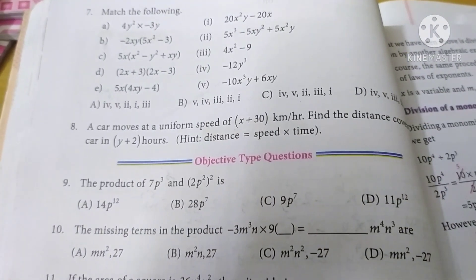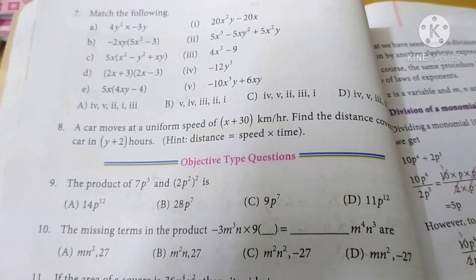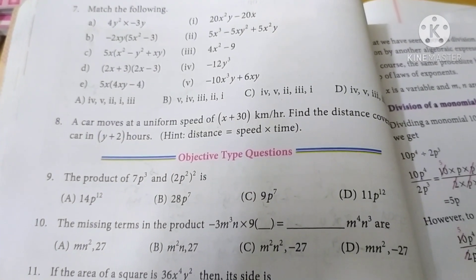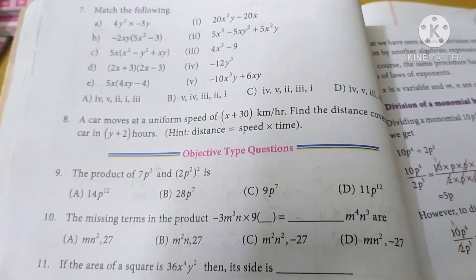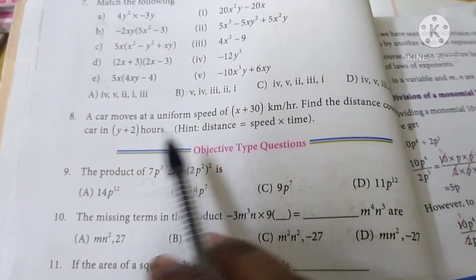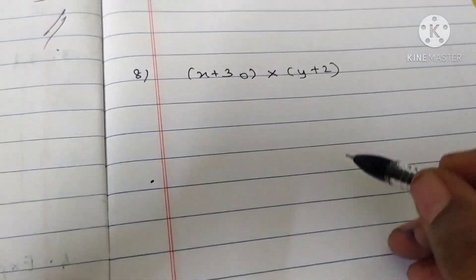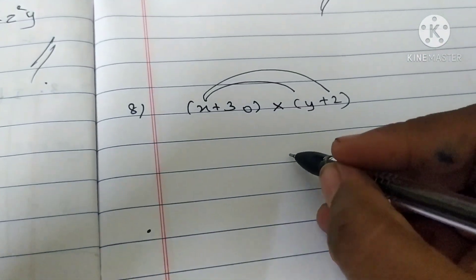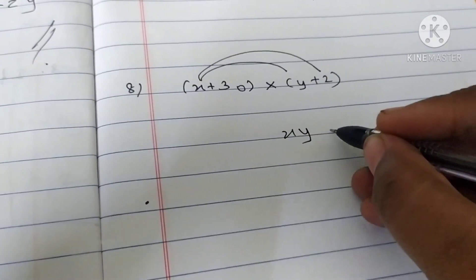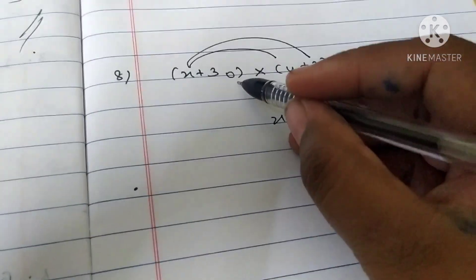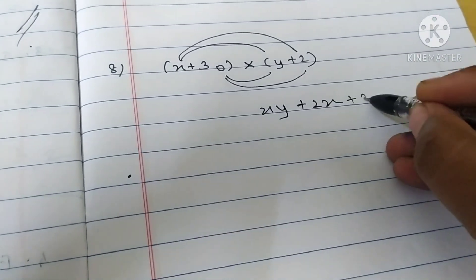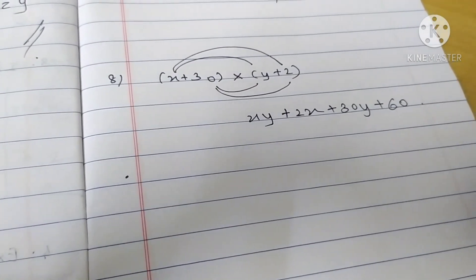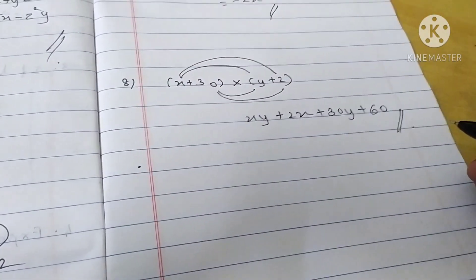Eighth question: your car moves at a uniform speed of x plus 30 km per hour. Find the distance covered by the car in y plus 2 hours. Hint: distance equals speed into time. So multiply x plus 30 by y plus 2. x into y gives xy, plus 2x. Then 30 into y plus 2 gives 30y plus 60. This is the answer. Thank you.